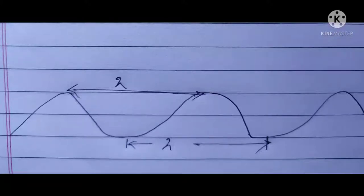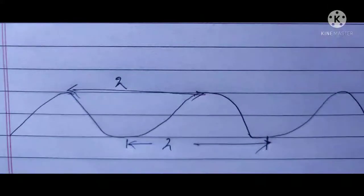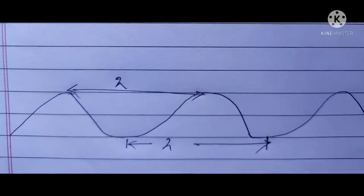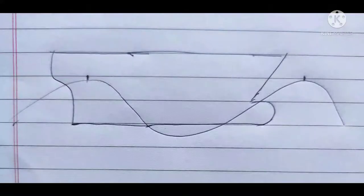Hello friends, today we are going to look at the concept of parametric rolling in ships. The first thing we need to know is the wavelength of a wave. As you can see, the length between two consecutive crests or two consecutive troughs is the wavelength for that particular wave.